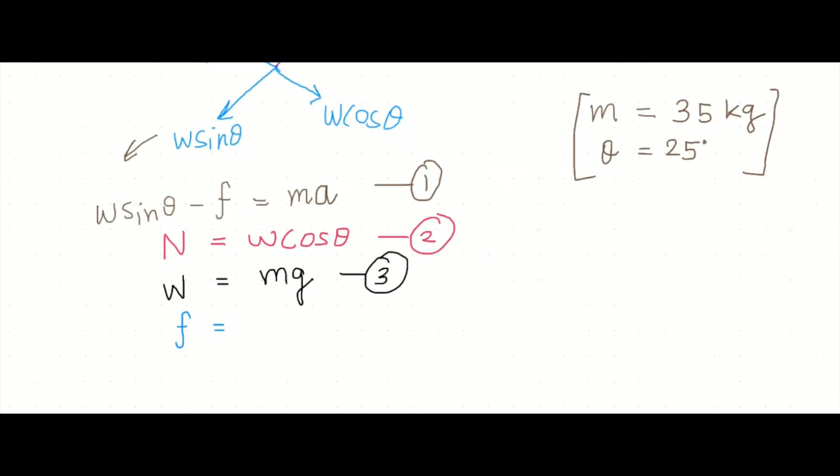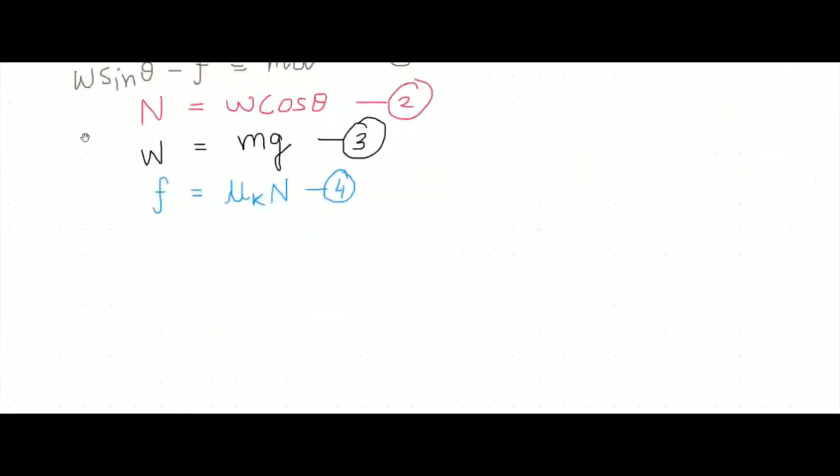Now using these three equations, and in fact there is another equation which is of friction. So friction is frictional coefficient or coefficient of friction which I will denote as mu k times normal reaction. So this is equation 4.